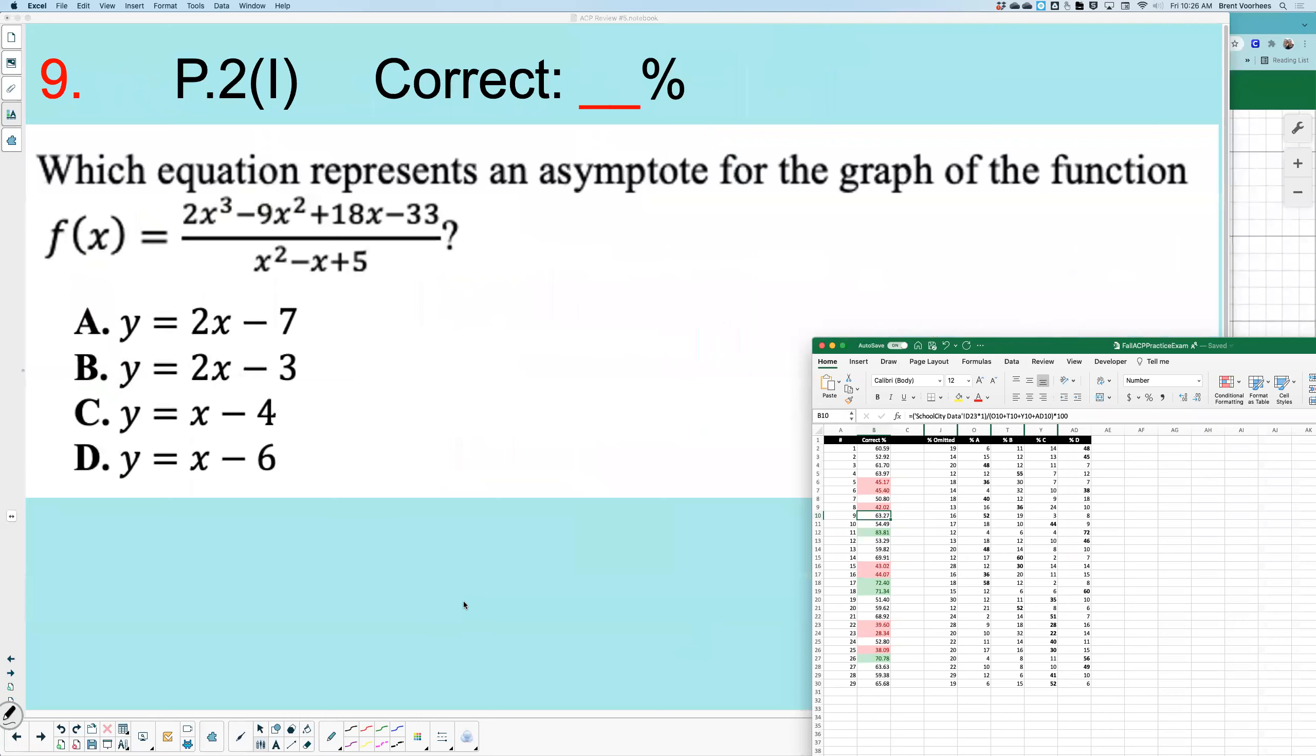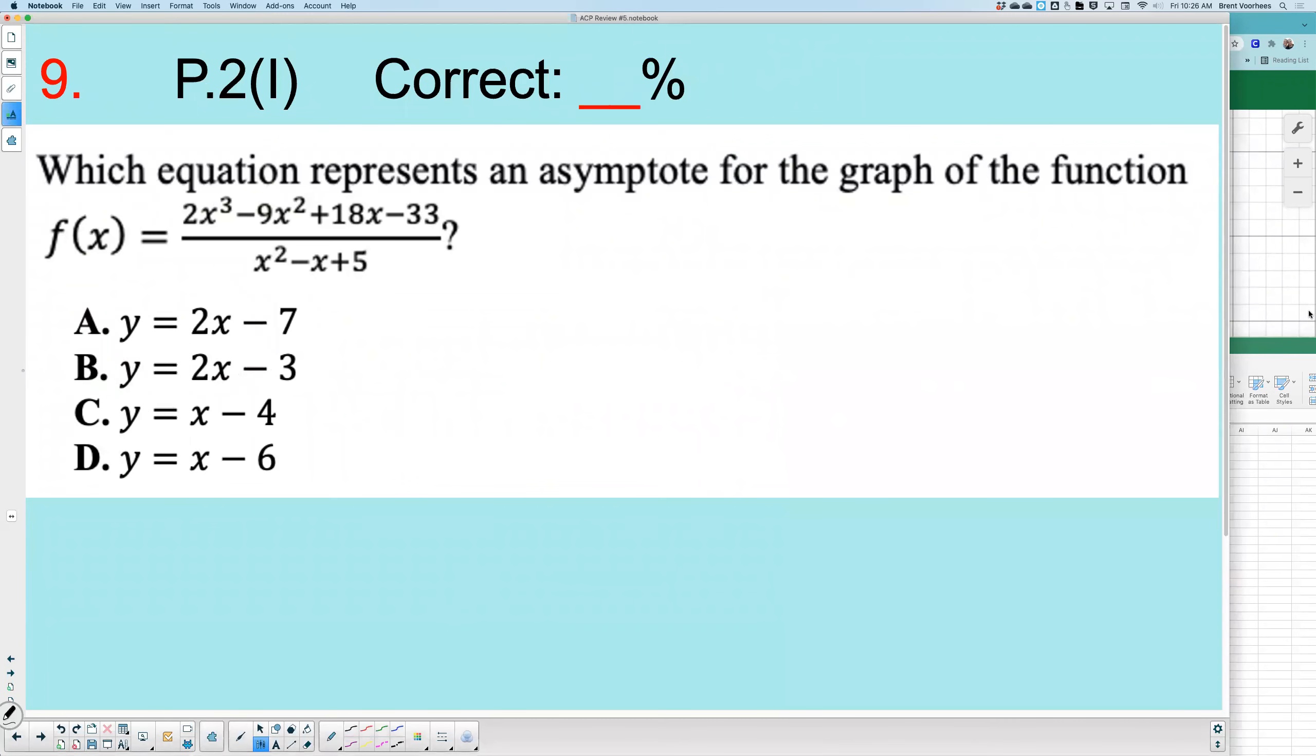Which equation represents an asymptote? We've seen this earlier. What does the true word for asymptote mean? Approach. And how would Ms. Mueller describe this? Friend zone. So you would graph this and see which one appears to be friend zoning.